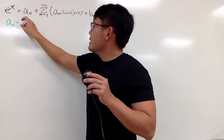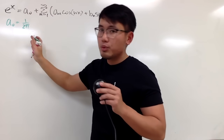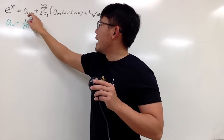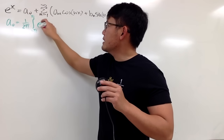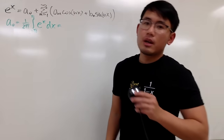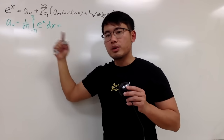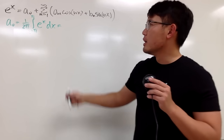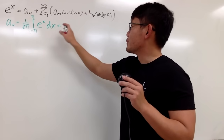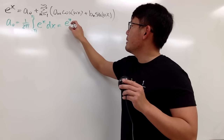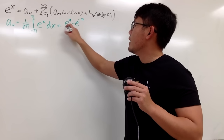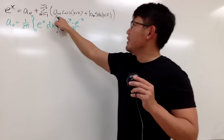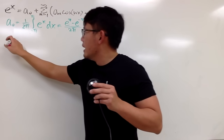Let's do a₀ first. We'll do three integrals in this video. The formula for a₀ is one over 2π, and we integrate from negative π to π of e to the x dx. When you integrate e to the x it's still e to the x, so evaluating gives us e to the π minus e to the negative π, all over 2π, and we're done.